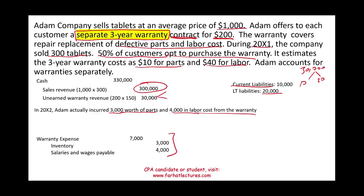Notice that for the extended warranty we did not prepare any expense in the year of the sale — we did not estimate the expense. Why? Because the expense must match the revenue. Since no warranty revenue was recognized in 20x1, there is no expense to report in 20x1. We waited until the customer actually came back and needed the work — that is when we report the expense.